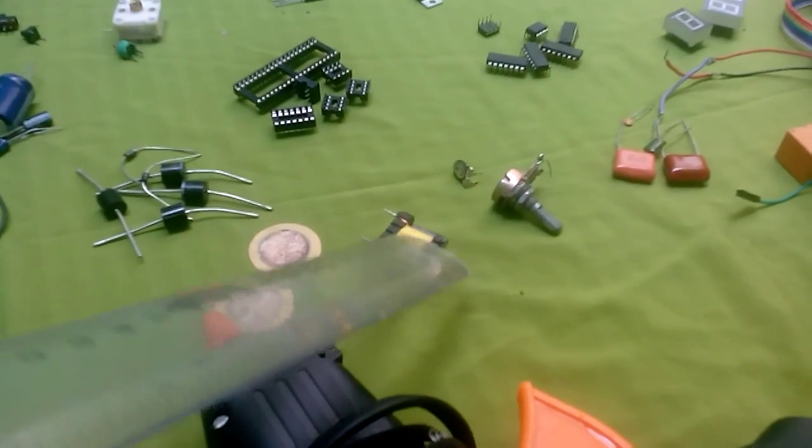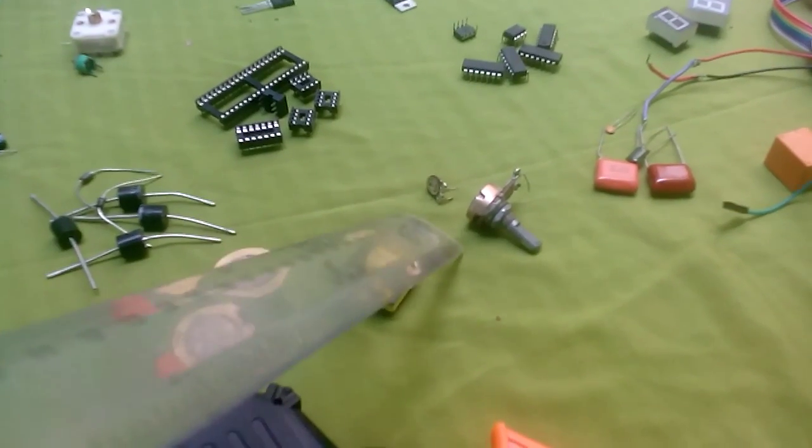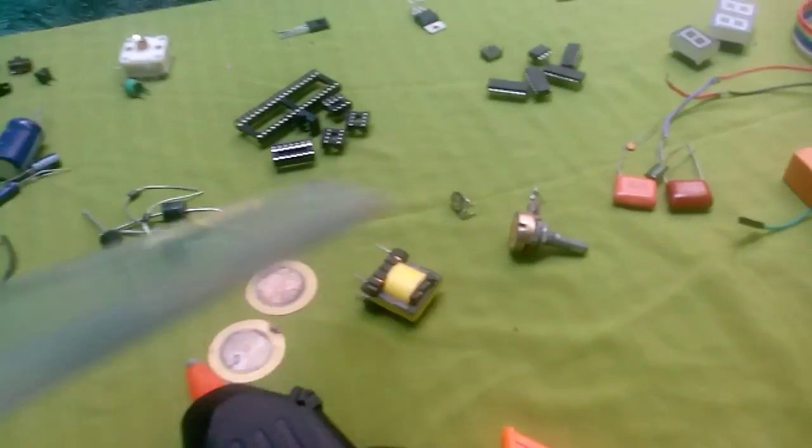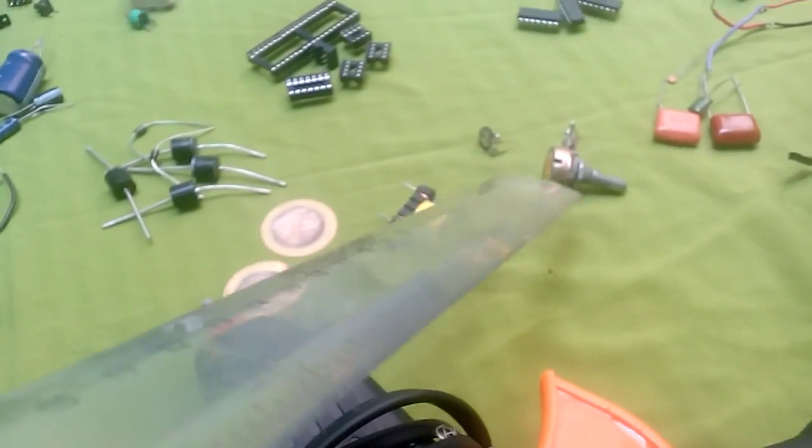This is my variable resistor. It's called a preset and it's called a potentiometer. Instead of fixed resistors, we are using these potentiometers and presets to vary the resistance between two values.